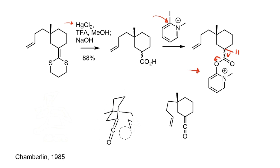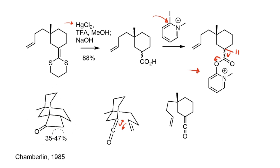Redrawn with the methyl group at the back, this ketene is now perfectly set up for an intramolecular [2+2] cycloaddition with the allyl group installed in the first step. We get cycloaddition and form a cyclobutanone ring in not unreasonable yield given the complexity introduced into the scaffold. And now we have all three rings needed for the clovene synthesis.